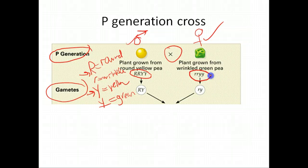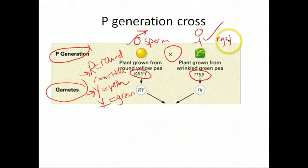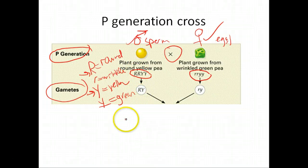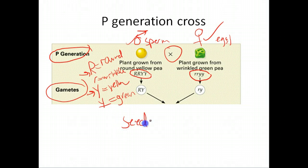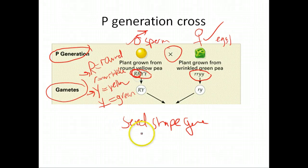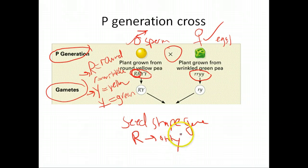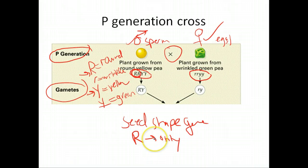The first thing you have to do is determine what alleles these plants can put into their gametes — for the male, what you'll see in the sperm, and for the female, what you'll see in the eggs. For the seed shape gene, what alleles can this male offer? Well, there's only one type — he's homozygous dominant, so the male can only offer a big R allele. You'll never find a little r allele in the pollen of this plant because it simply doesn't exist.